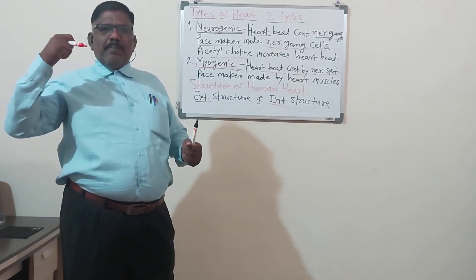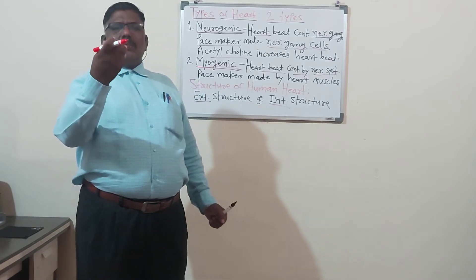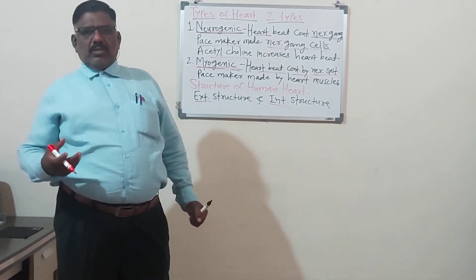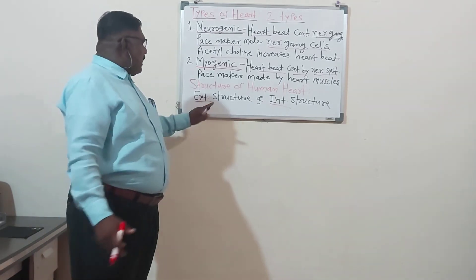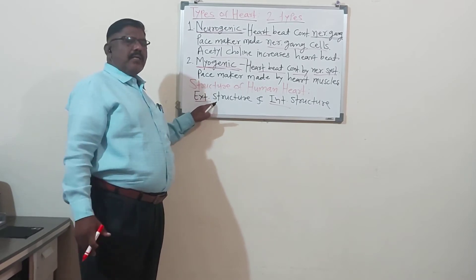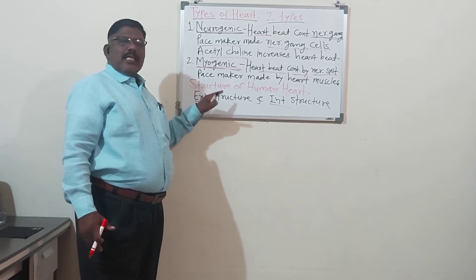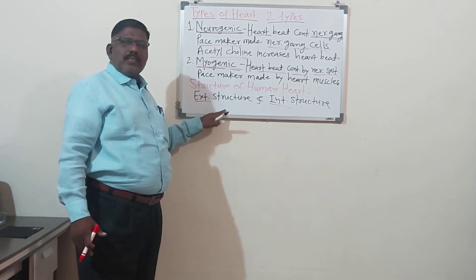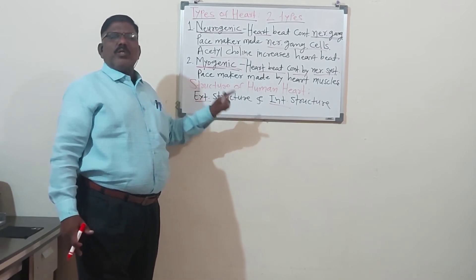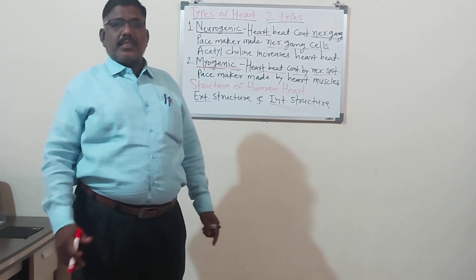The pericardial space is not empty — it is filled by fluid called the pericardial fluid. The function of the pericardium is to protect the heart. When there is any impact or bombardment on the heart, it acts like a balloon and prevents that impact from reaching the internal structure of the heart. This is sufficient about the external structure of the heart.